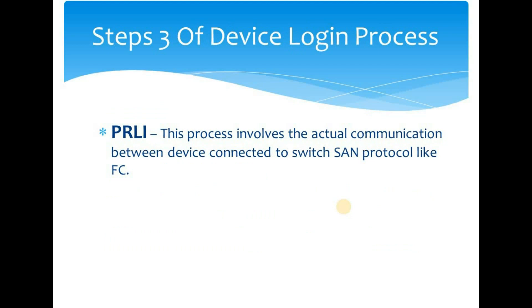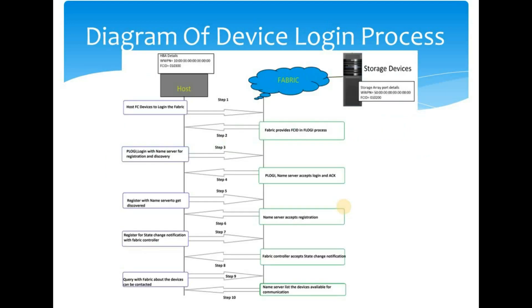The third process is PRLI, or Process Login. This is where actual communication between devices connected to the switch takes place — an N port can communicate with another N port. In simpler terms, a host is able to communicate with a storage array through the switch. This also involves additional steps like zoning and storage array configuration, after which the host sends a PRLI request to the storage array, the storage array accepts it, and communication is established.